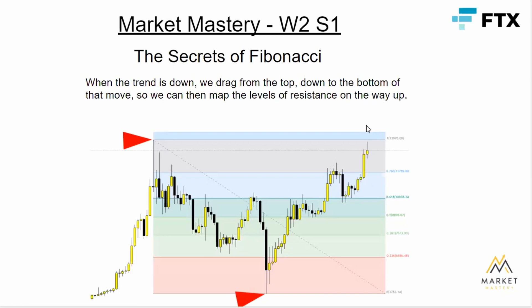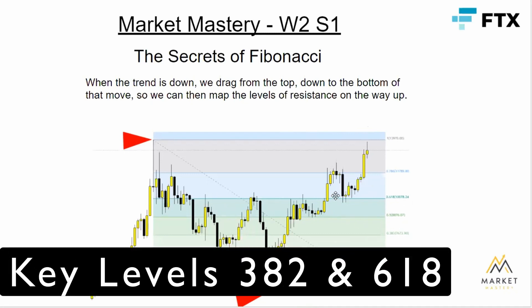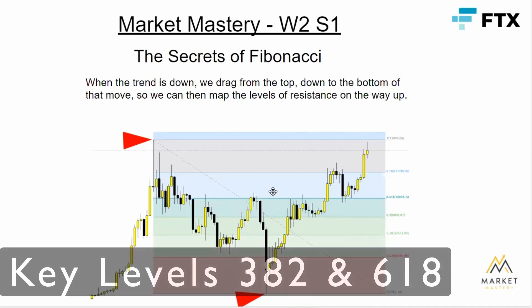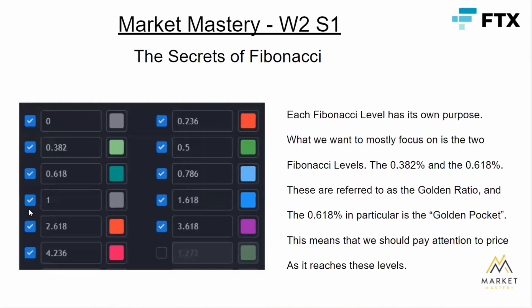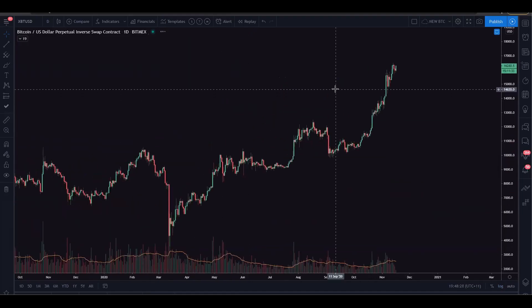Something quite funny you'll find when you start using Fibonacci more often: when you use the Fib tool, the key levels — so the 0.382 and the 0.618 — usually line up a lot with key horizontal levels in the chart. So if we're looking for a 382 or a 618 pullback, and that also lines up with a really key level in the chart, that's a really good example of a confluence. So the 618 is the key level here, and we come back and bounce off that quite nicely.